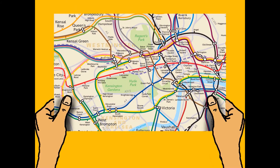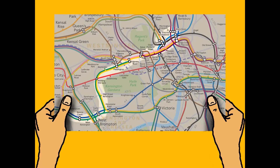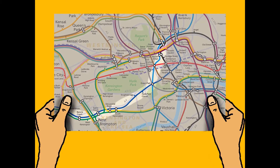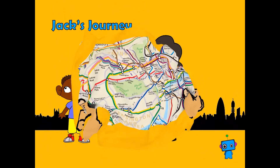He gets a map with the tube lines on it, but again there's too much information. Should he go this way? Should he take the green line? Should he go up the blue lines? It's very difficult to tell from this map. Because of all the confusion and all the different things on it, he can't see clearly where to go.